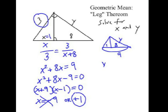So, Y is the geometric mean, this time, between the near part of the hypotenuse, which is the 8, and the entire hypotenuse, which is 9.